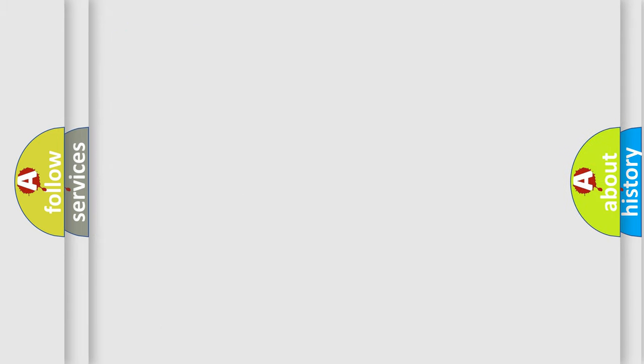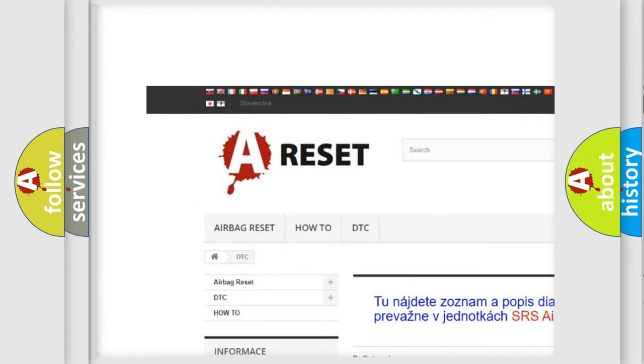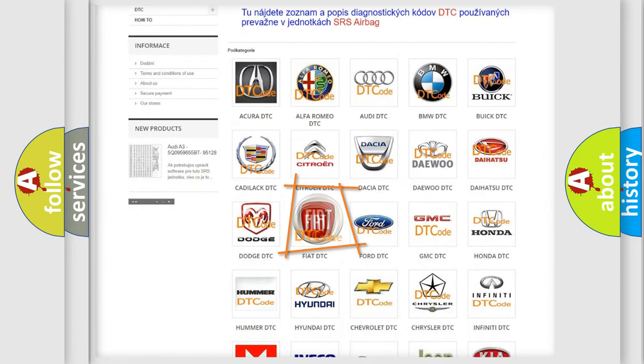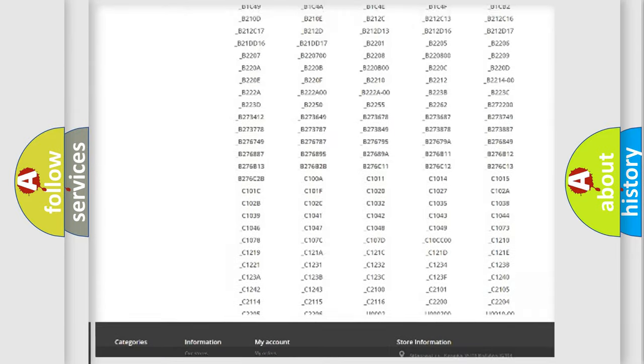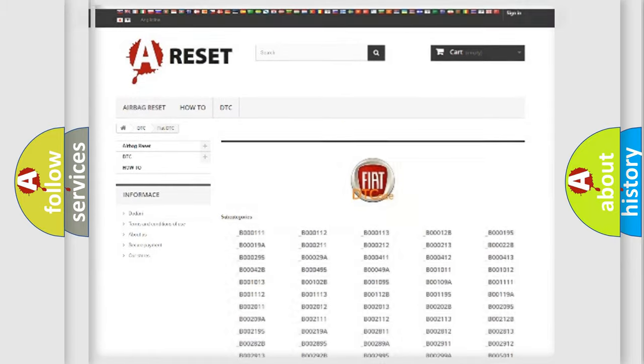Our website airbagreset.sk produces useful videos for you. You do not have to go through the OBD2 protocol anymore to know how to troubleshoot any car breakdown. You will find all the diagnostic codes that can be diagnosed in FIAT vehicles, and many other useful things.